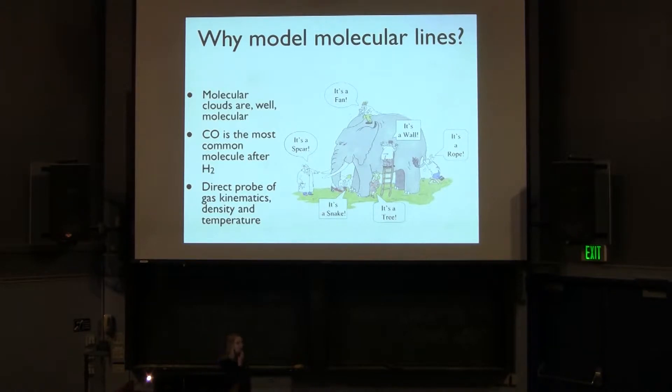You still might not be convinced that you should take your nice, pure numerical simulations and post-process them to get this very messy line information. But if you don't believe me, you might find yourself acting out this parable of the blind astronomers and the elephant. What they're really telling you is probably about the CO legs of the elephant. They might be telling you about the N2H+ tail of the elephant. So unless you do this post-processing, you will have a very difficult time actually comparing with real data.